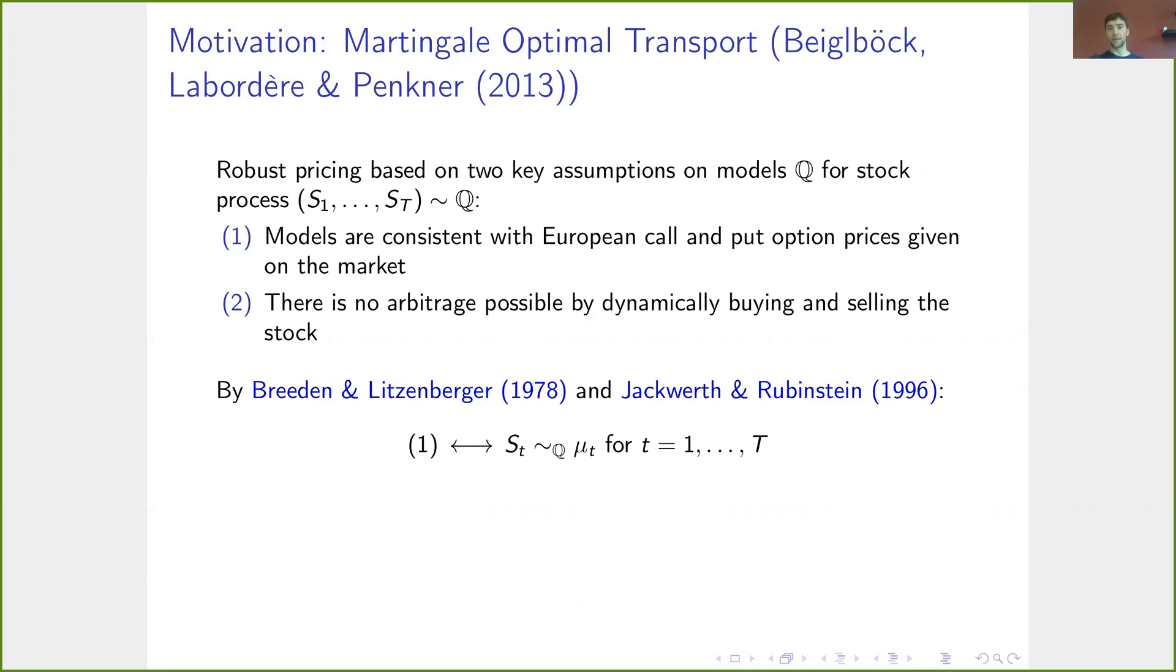The first one, if there are sufficiently many such options on the market, means that we know the one-dimensional marginal distributions, and the second one means that the stock process is a martingale under this distribution.